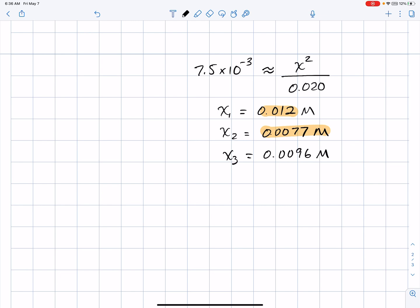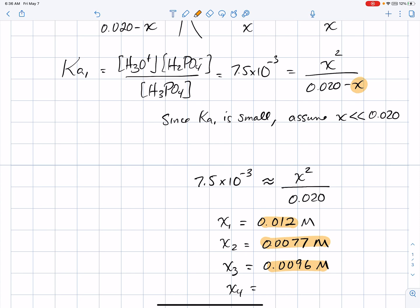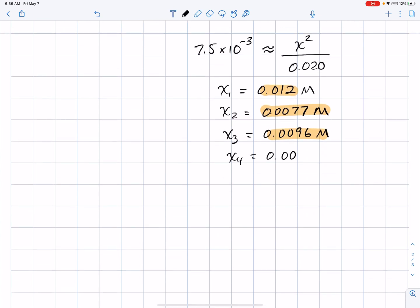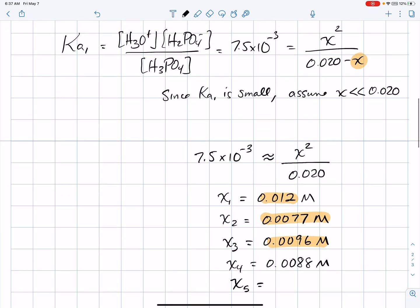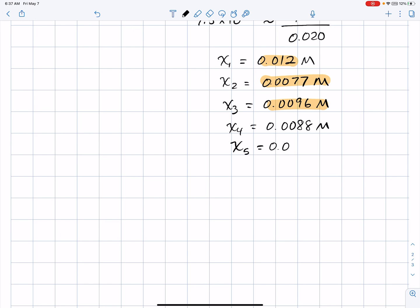The successive approximations approach, your answers bounce around the true value, but they get closer and closer. So, let's do a fourth one. We're going to continue this until we get the answer staying constant. Take the 0.0096, put it back in the denominator, 0.02 minus 0.0096, multiply by the Ka value, and square root. We're getting towards the answer, 0.0088. Normally, you don't need to do this many approximations. Let's do a fifth one. 0.02 minus 0.0088, times by the Ka value, and square root. So, we're getting close, 0.0092.